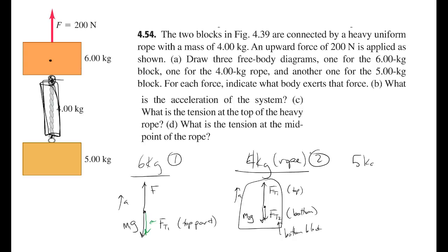Now for the 5-kilogram block, which I'll call object 3: from its perspective it feels the Earth pulling it down and tension from the rope pulling it up — that's it. So we have FT2 going up and M3G pulling down. That's the free-body diagram for all three objects.